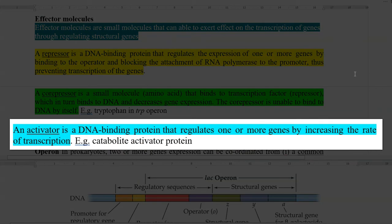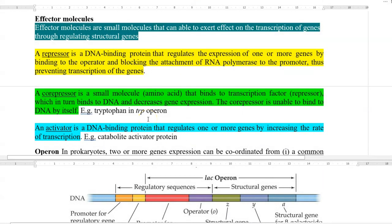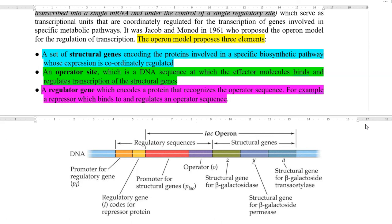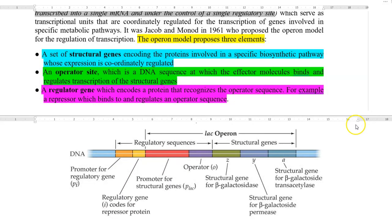An activator is a DNA-binding protein that regulates one or more genes by increasing the rate of transcription. An example is catabolite activator protein. The regulatory gene refers to a gene that encodes a protein that recognizes the operator sequence. As shown in the diagram, a repressor protein encoded by the regulatory gene can bind to and regulate the operator region of the gene.